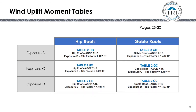There are now six wind uplift tables — three for hip roofs and three for gable roofs — broken down by exposure. Exposure B hip roof is Table 2HB; Exposure B gable roof is Table 2GB. Exposure C hip roof is Table 2HC; gable roof is Table 2GC. Exposure D uses Table 2HD and Table 2GD.